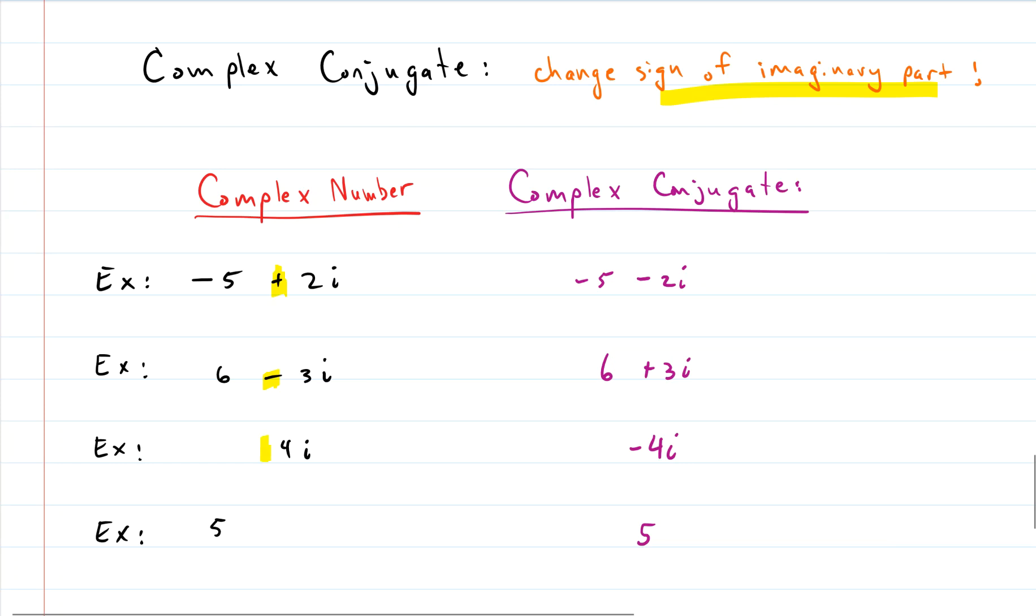Notice all of these three examples above had an imaginary number included with the complex number, and that's the part that we changed the sign of. But this last example, it didn't have an imaginary part, so I couldn't change the sign of an imaginary part.